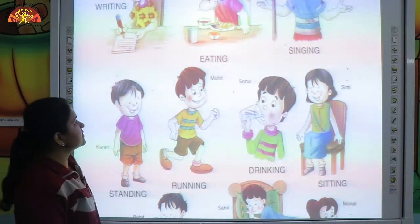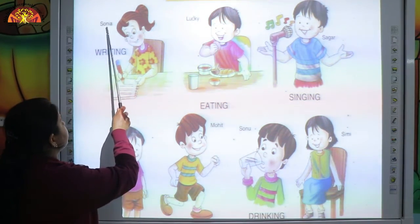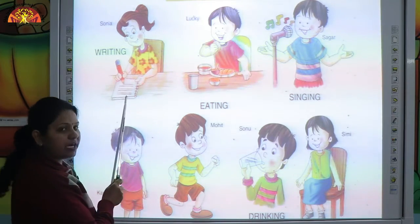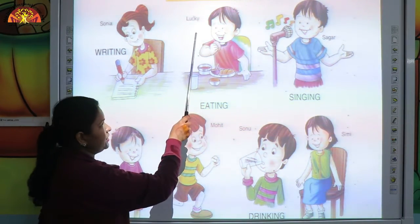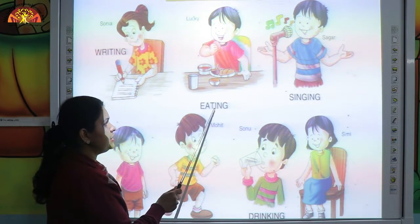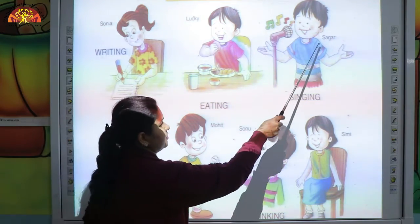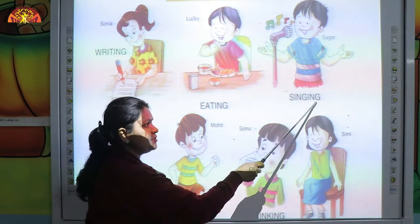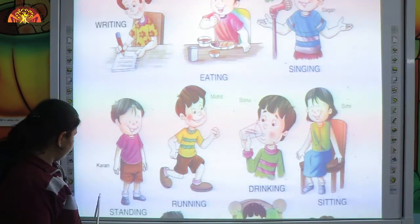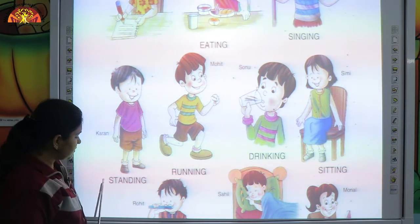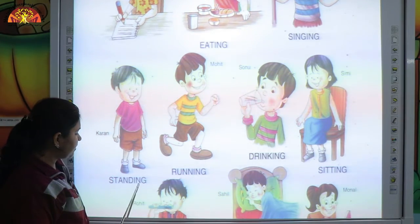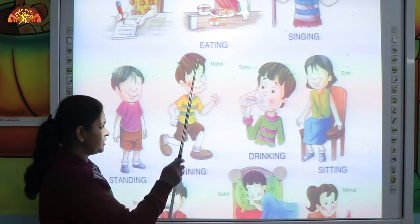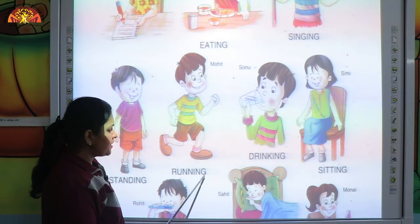Now let's revise all these action words again. Sonia is writing. Lucky is eating. Sagar is singing. Karan is standing — S-T-A-N-D-I-N-G, standing. Mohit is running — R-U-N-N-I-N-G, running.